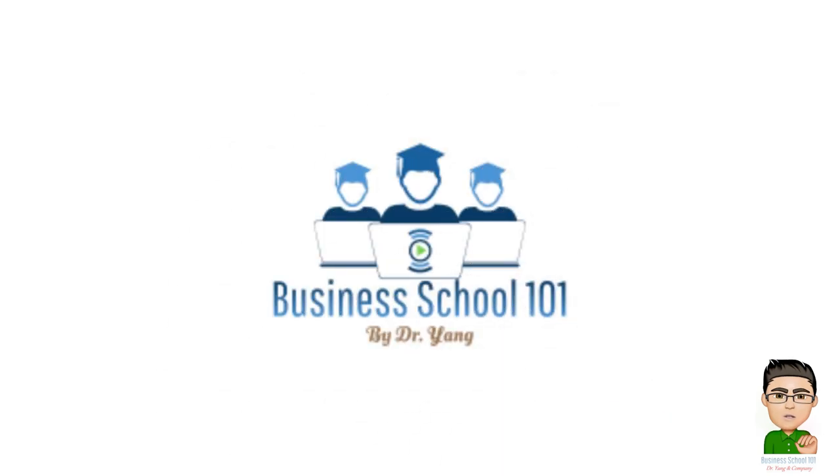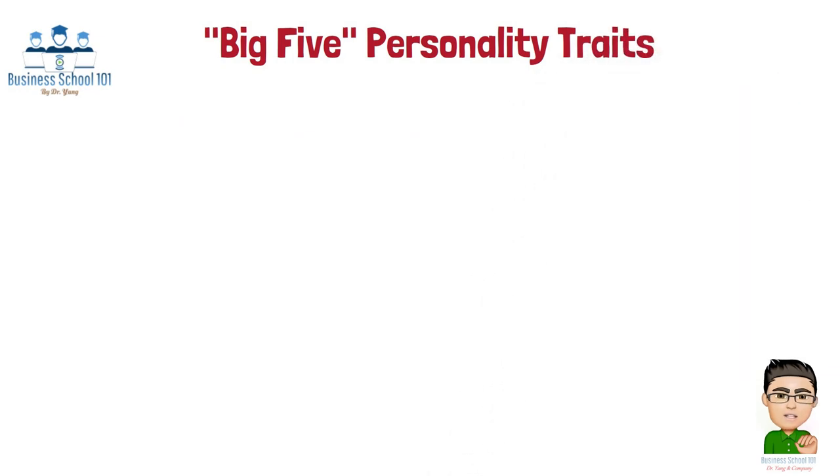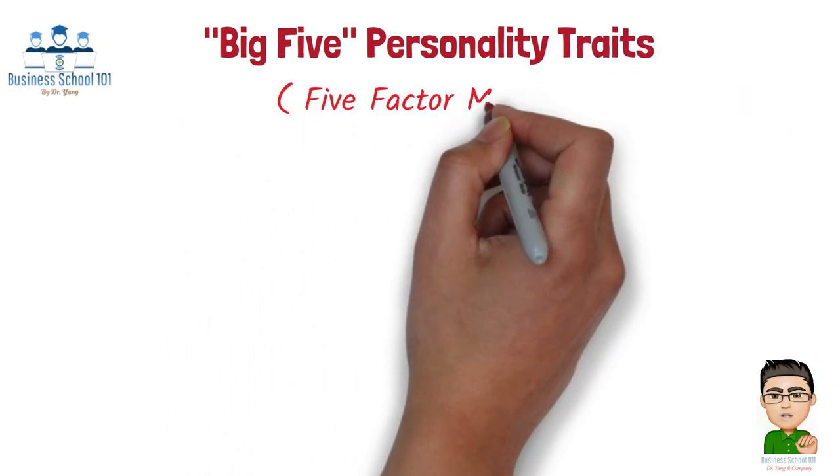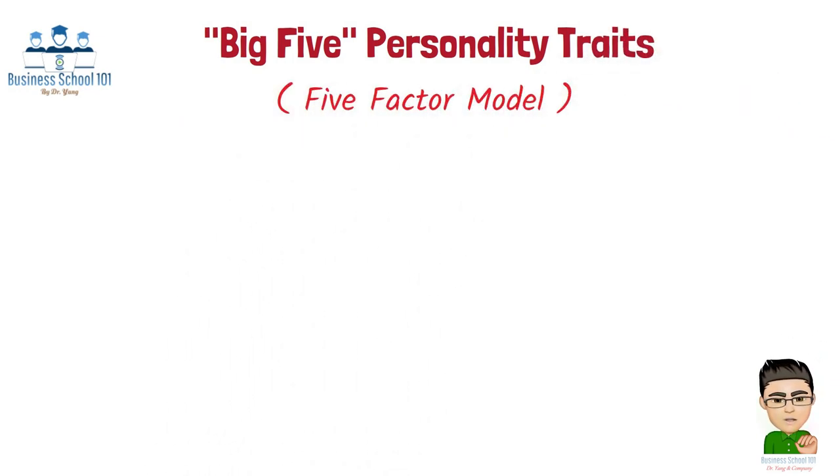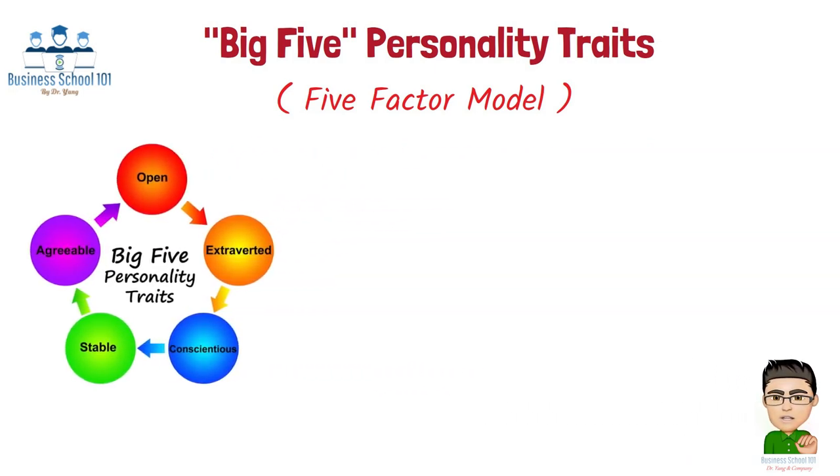Hello everyone, welcome to Business School 101. The Big 5 Personality Trait Taxonomy, also known as the 5-Factor Model, is a widely accepted and influential framework used in organizational behavior and human resource management to describe and categorize human personality.